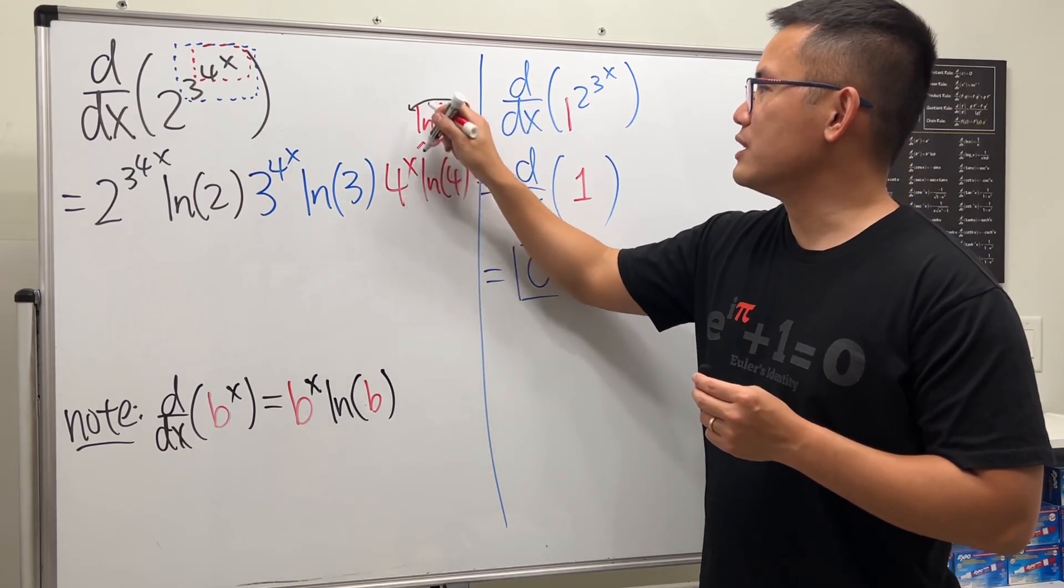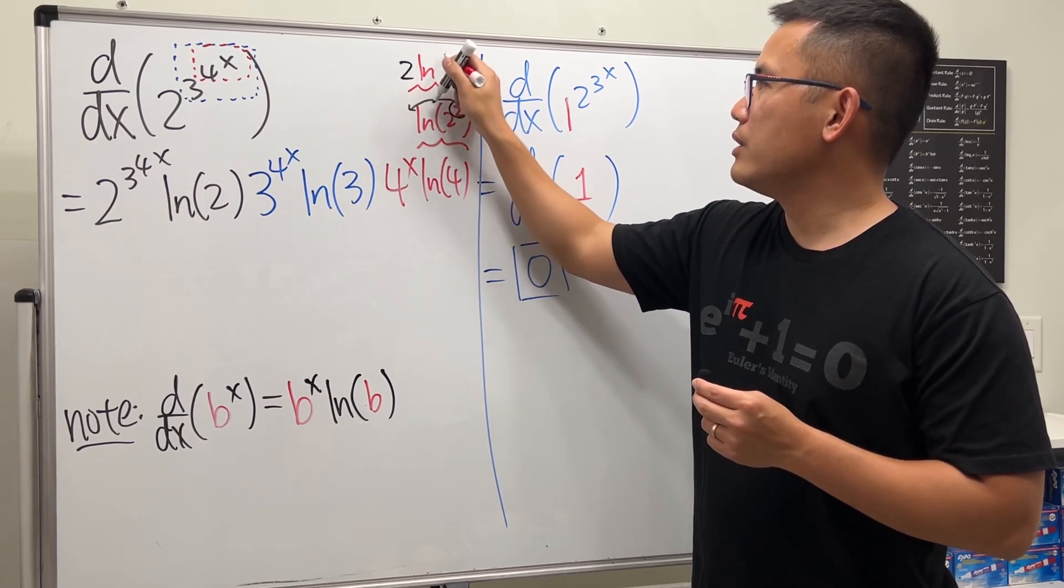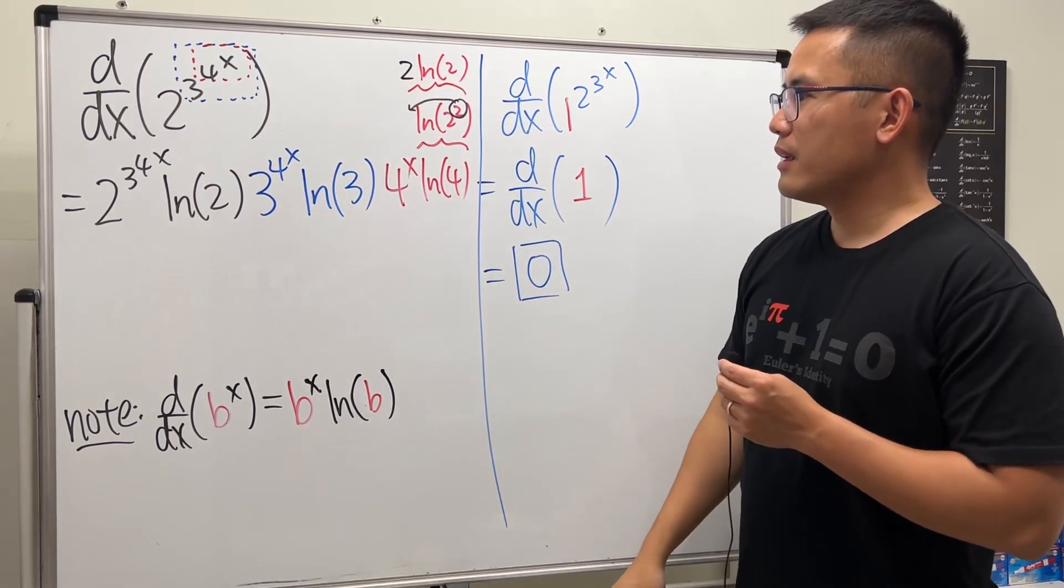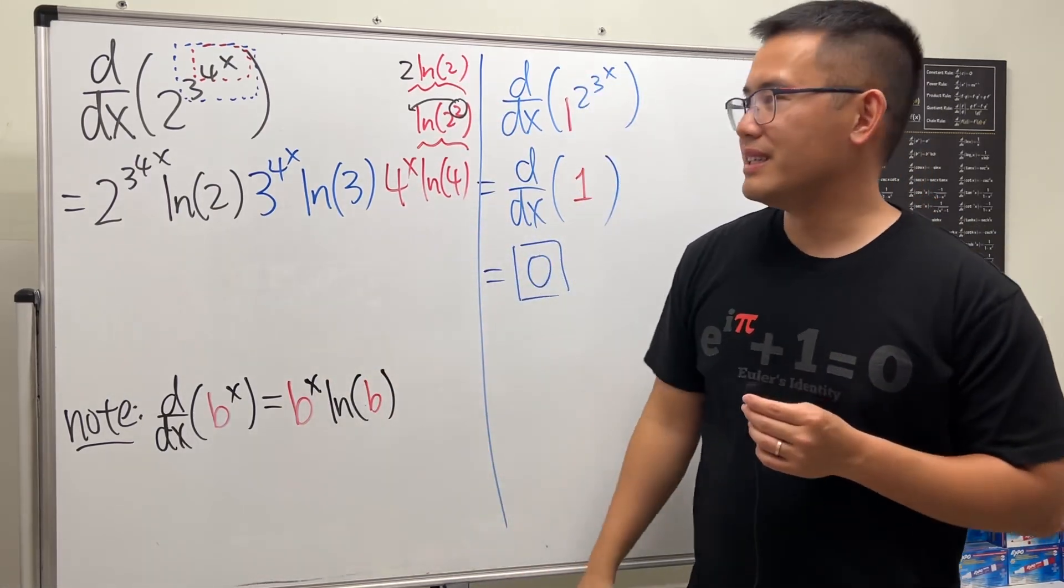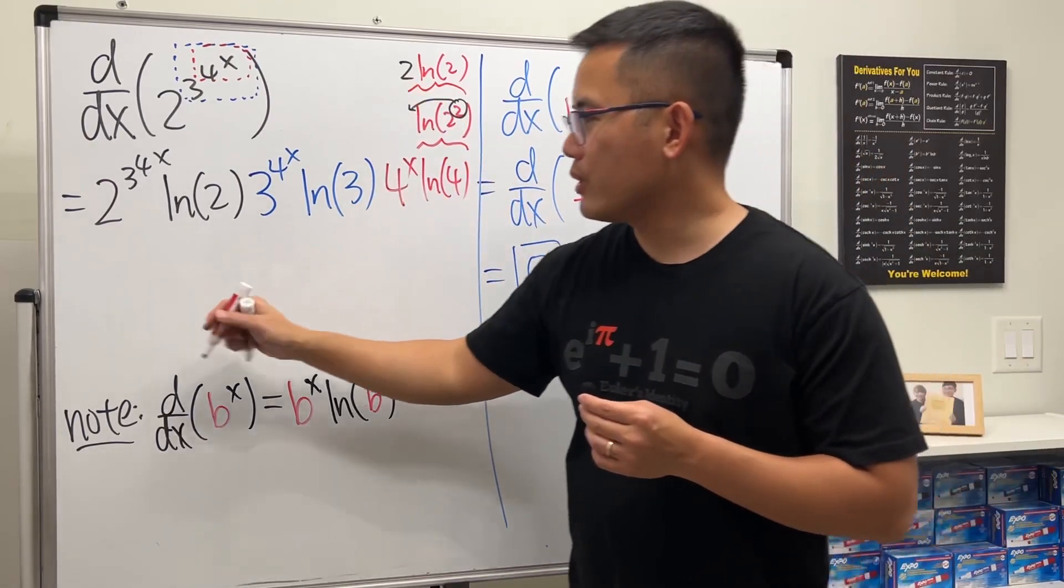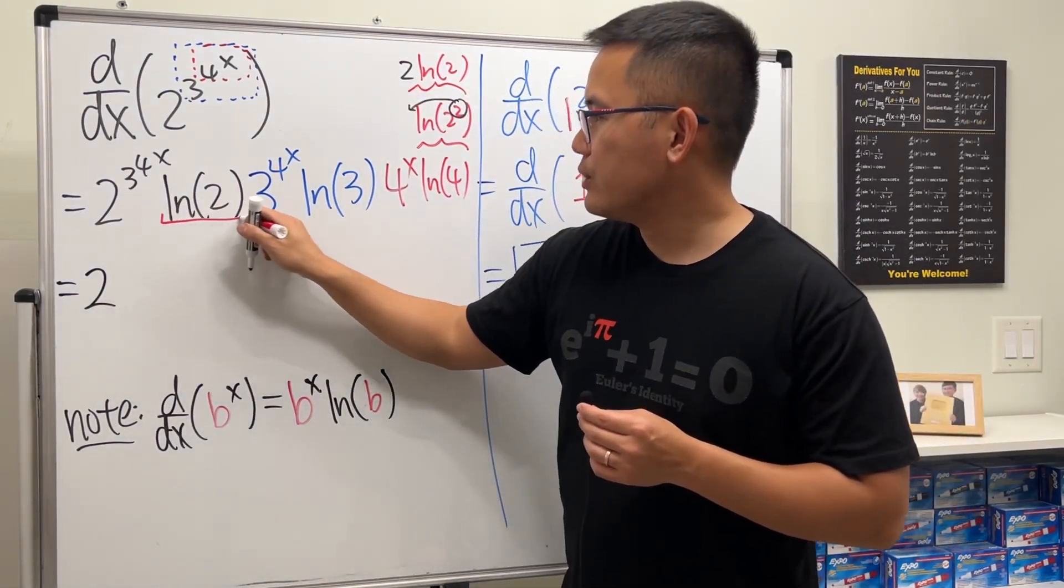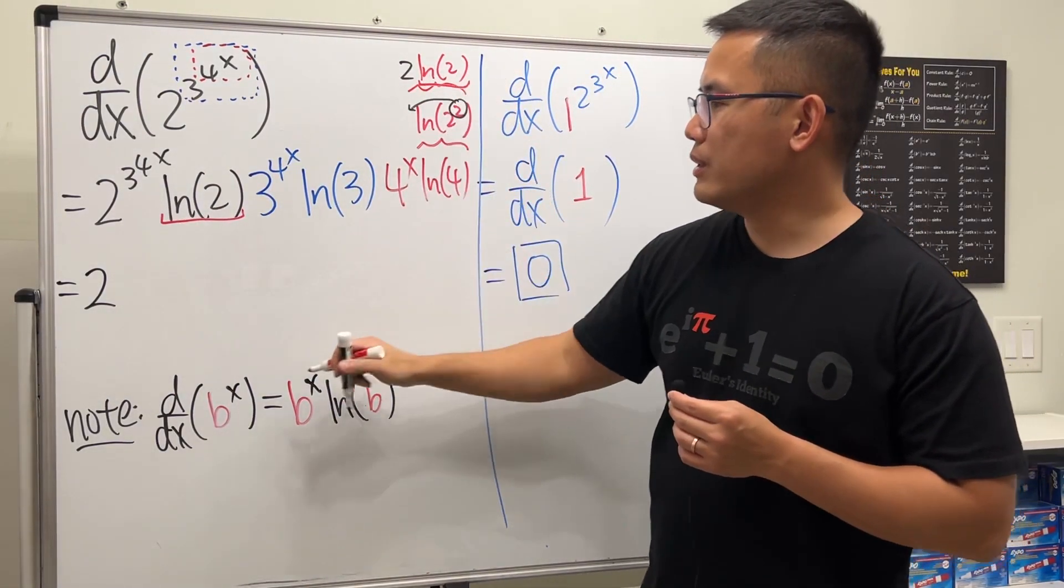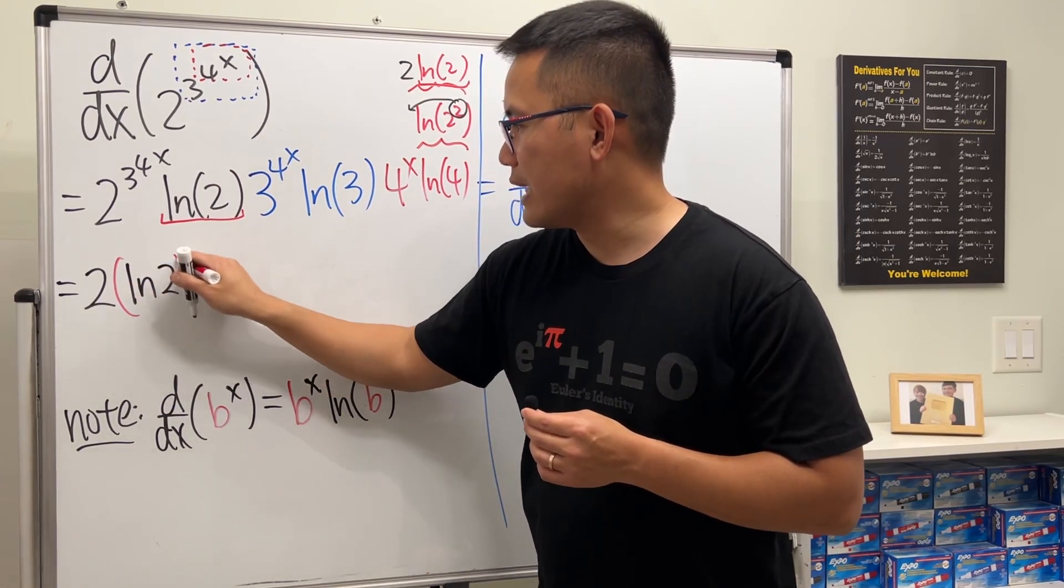So this is really just the same as 2 times ln of 2, and you have this ln 2. That ln 2, it's ln 2 squared. So let's just put down all the numbers first. We have this 2 going all the way at the front, and then this ln 2 multiplied with that ln 2 is ln 2, and then we square that.